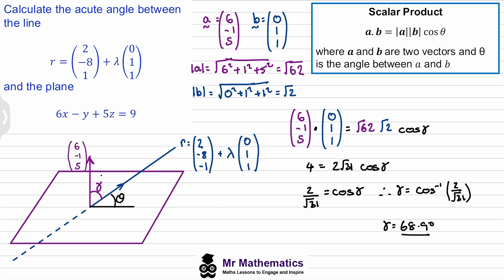So now remember, this is this angle here — 68.9 degrees. What we want to work out is theta. So we know that theta will be 90 minus 68.9, which is 21.1 degrees.